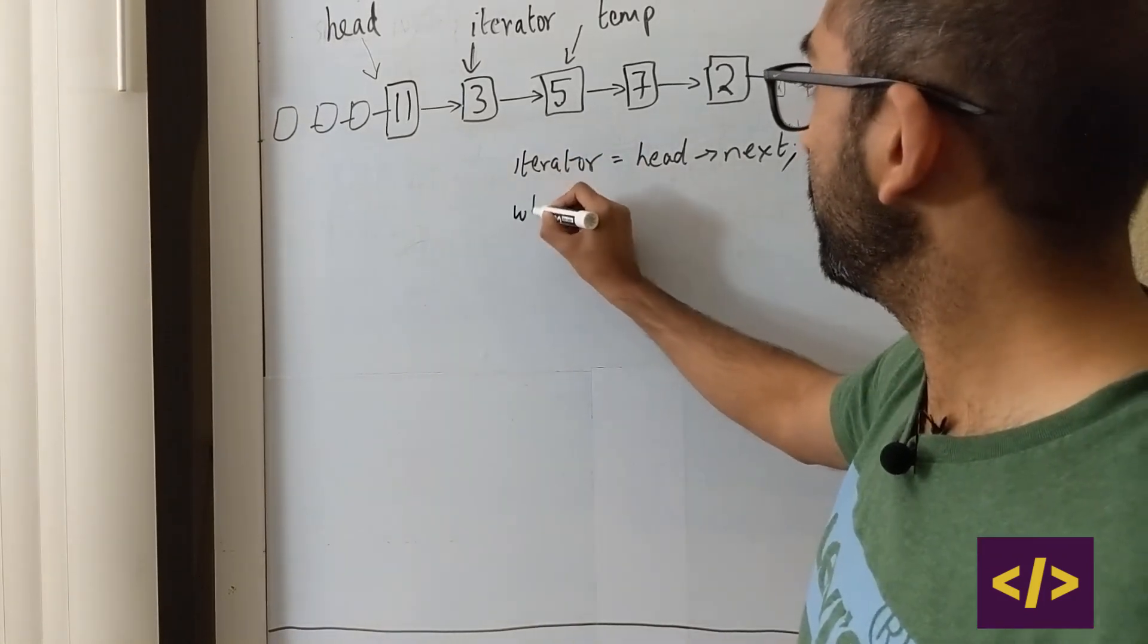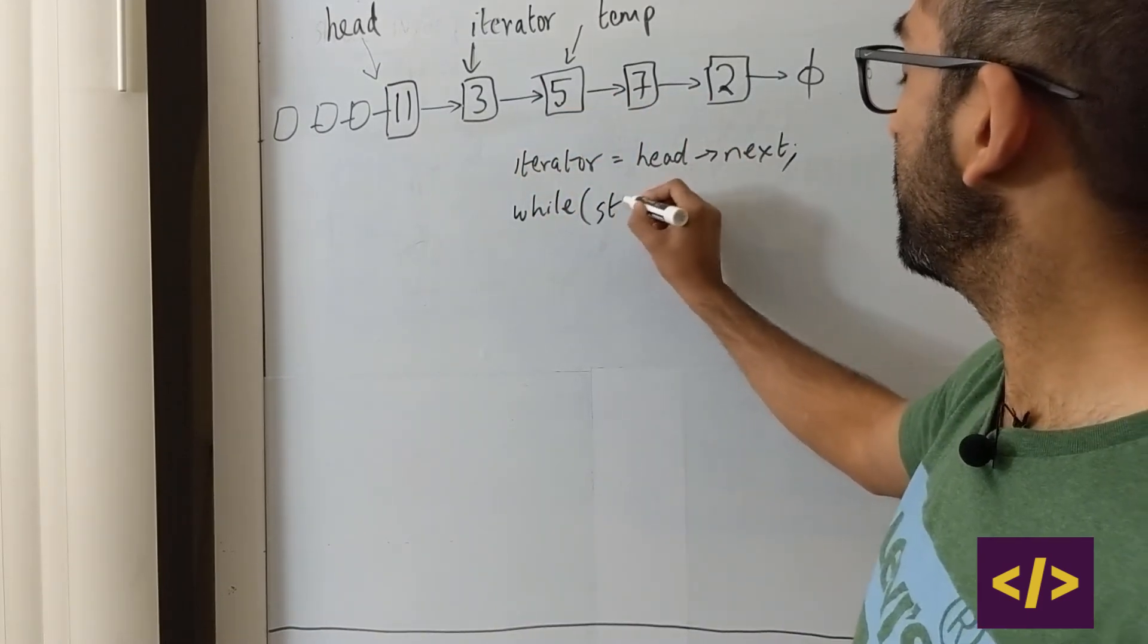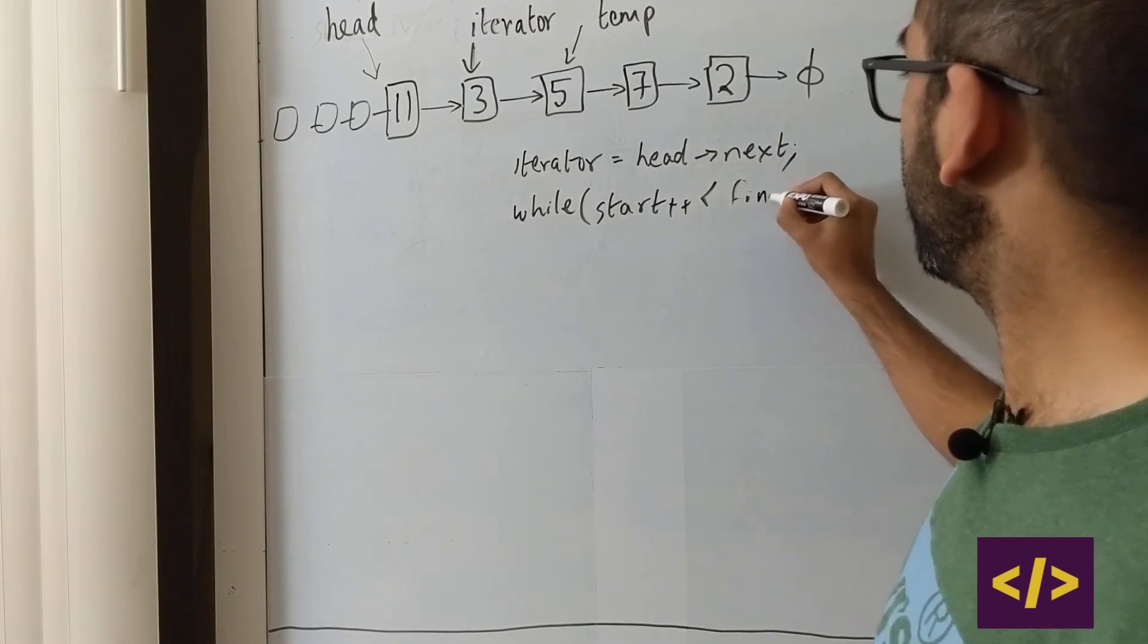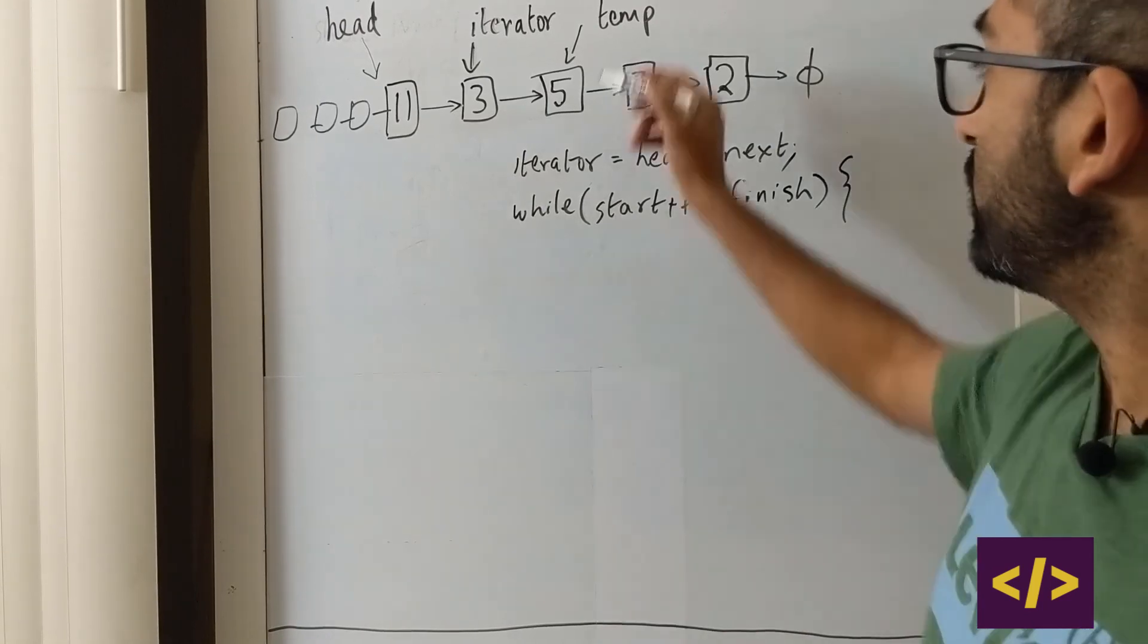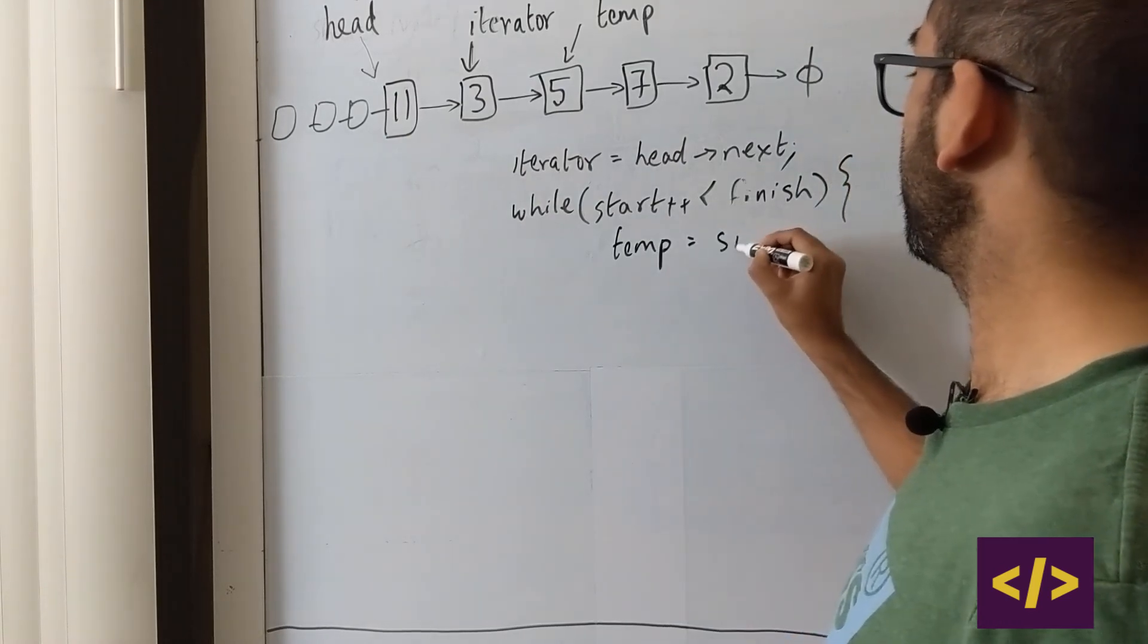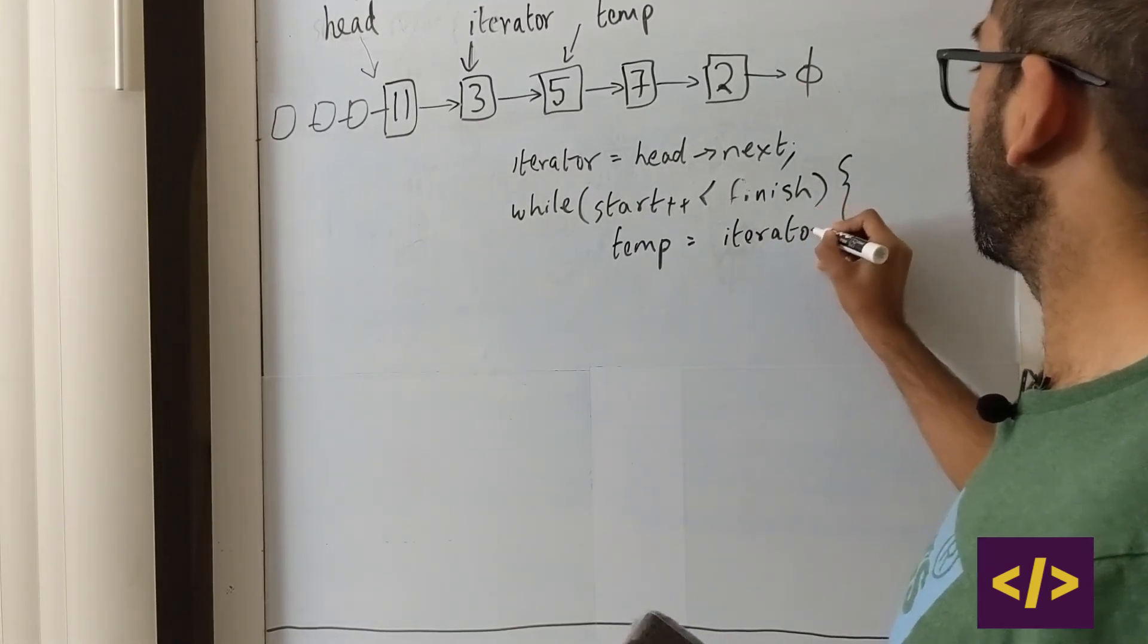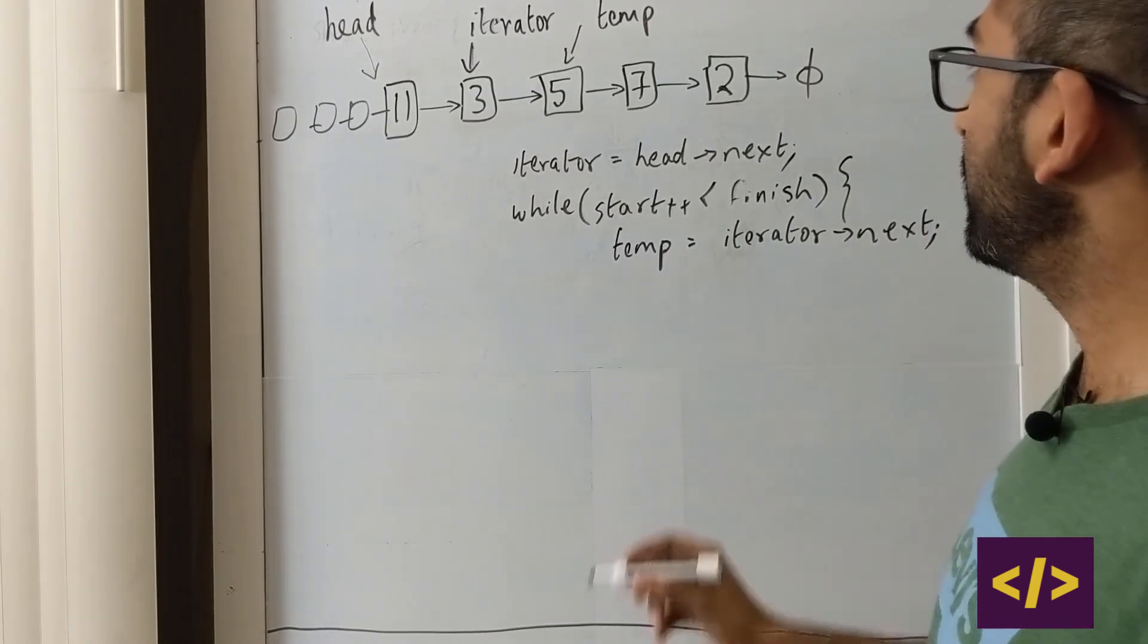And then you can start looping through. And now, in our example, we'll need to go all the way from start till the finish. So while start less than finish, what we're going to do is... First we need to define temp. What are we going to define temp as? Temp will be defined as iterator is next. Right?